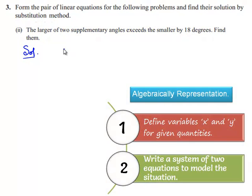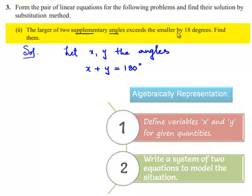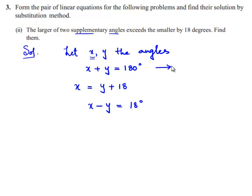So let x and y be the angles. It is mentioned that they are supplementary, so we can say that x plus y is equal to 180 degrees. Also, the larger of the two supplementary angles exceeds the smaller by 18 degrees. So I assume x is the larger angle, that means x is equal to y plus 18, so we can write x minus y is equal to 18 degrees. This is equation number 1 and this is equation number 2.